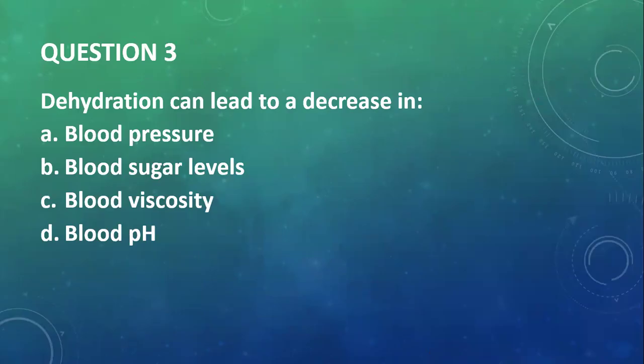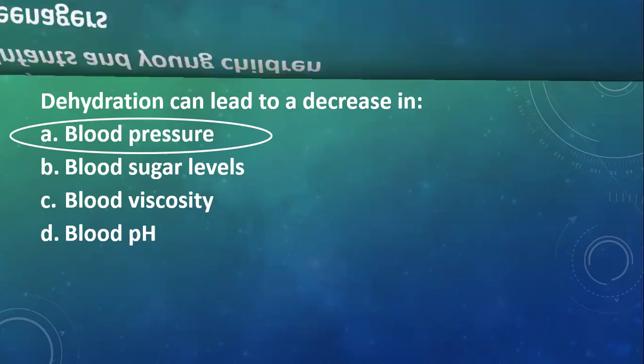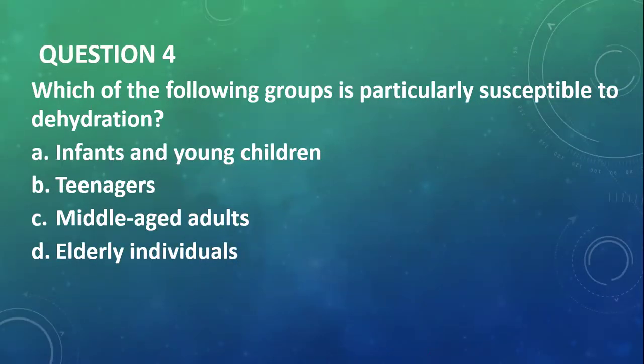Question 3: Dehydration can lead to a decrease in blood pressure, blood sugar levels, blood viscosity, or blood pH? Actually it would lead to a decrease in blood pressure. Viscosity actually increases, blood pH depending on what caused the dehydration may increase or decrease. So our answer would be blood pressure.